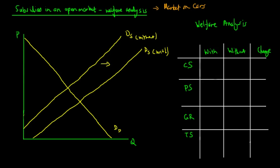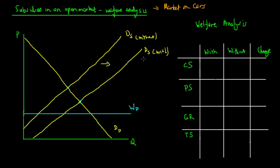In an open market, it is often the case that the world price is below the domestic market equilibrium — both with and without subsidies. So the world price will still be below the domestic supply line or domestic equilibrium price, whether the subsidy is in place or not.